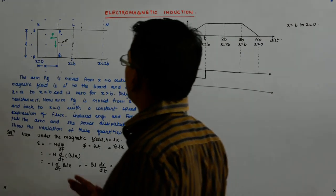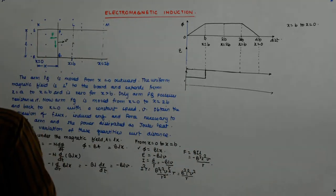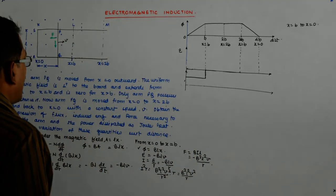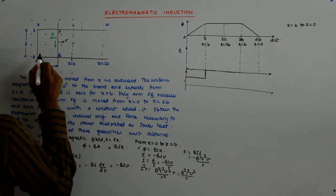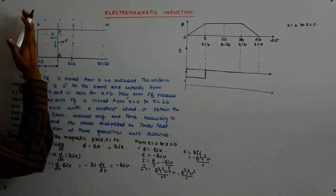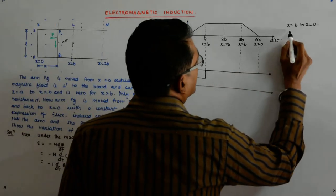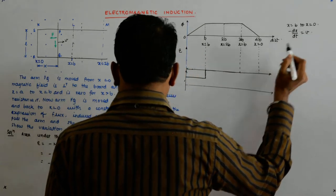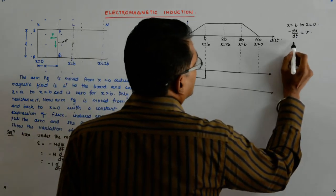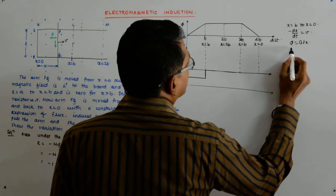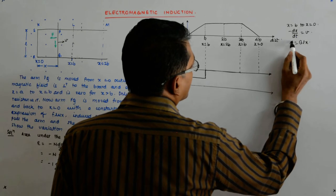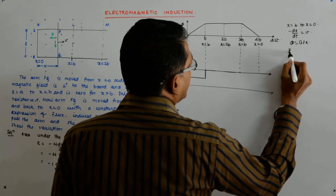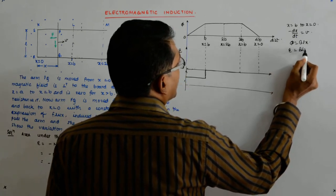When you push back, when you go back what happens? Your x starts reducing. So minus dx by dt is equal to V. So what happens? φ is still blx, but e is equal to blv.